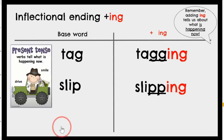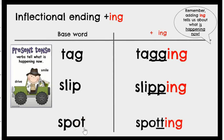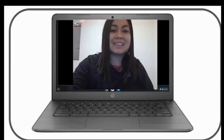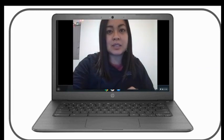Here is our last verb: spot. Spot has a short O sound followed by the consonant T, so we double the T and add -ing to get spotting. She is spotting her pet over there. So the two big rules are: first, if a verb has a short vowel followed by a consonant, keep it a short vowel; second, double the final consonant before adding -ed or -ing.